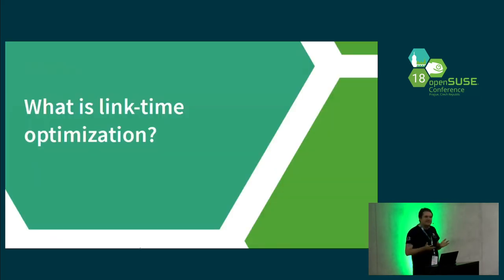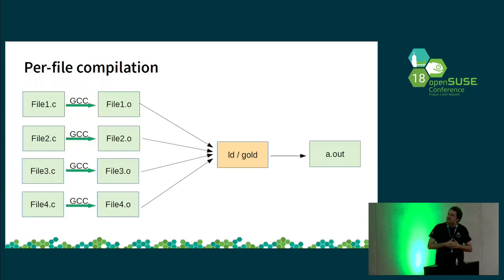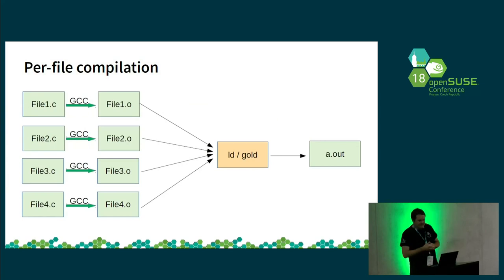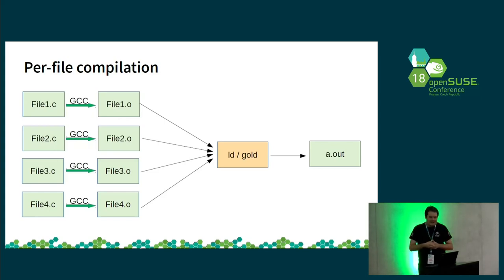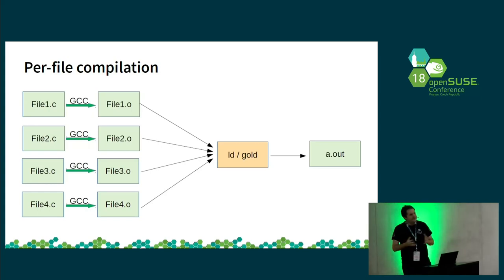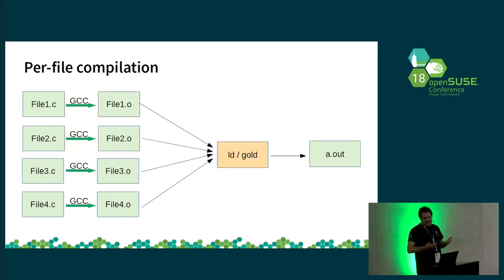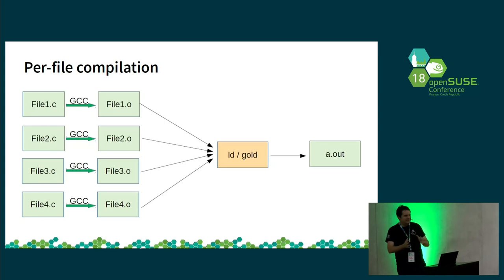This is the usual compilation model of C compilers, starting from the 70s. In this model, you run the compiler on every single source file and produce object files containing the final binary or assembler output. Then you use the linker, which just glues it together, and you get your binary. It's fast and you can distribute the build process, but it limits the compiler's optimizations because it doesn't know what other objects are doing — it only sees part of the program.